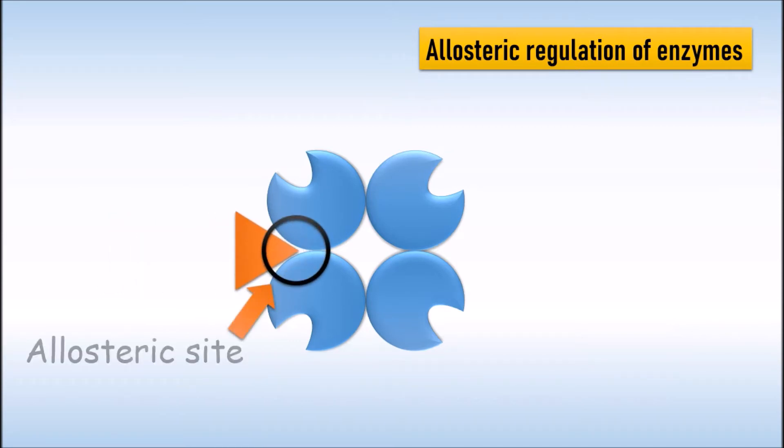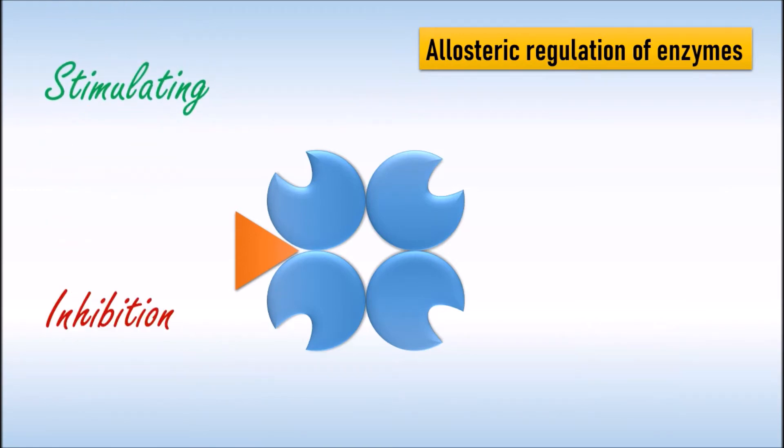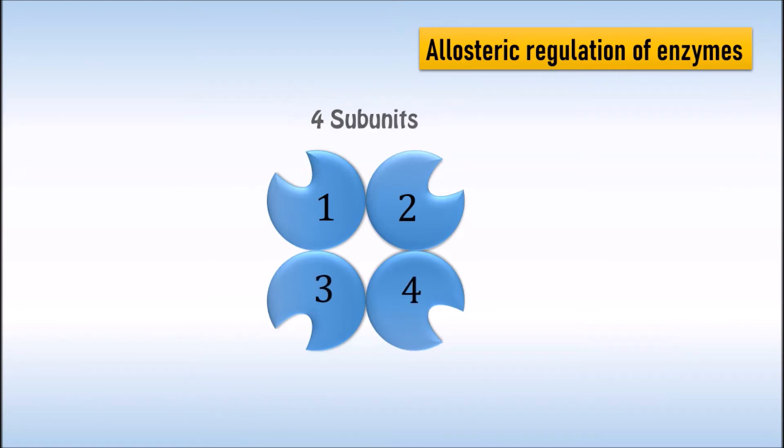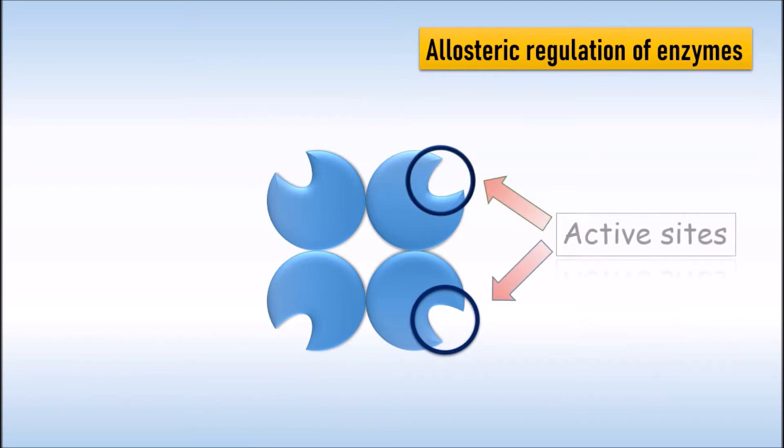It may result in either inhibition or stimulating the enzyme activity. Most enzymes regulated by allosteric regulation are made from two or more subunits. Allosteric enzymes typically have multiple active sites located on different protein subunits.